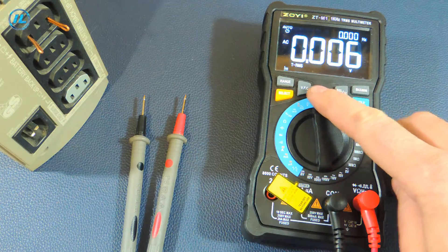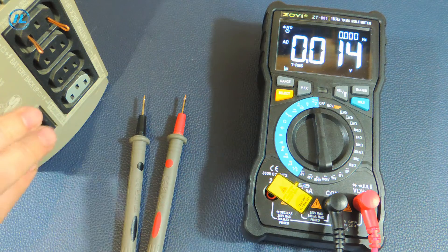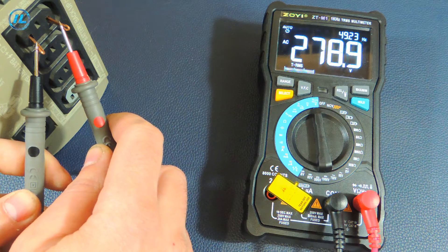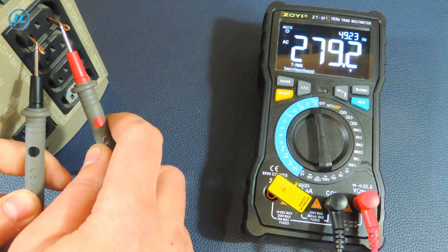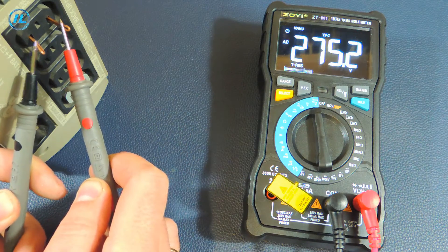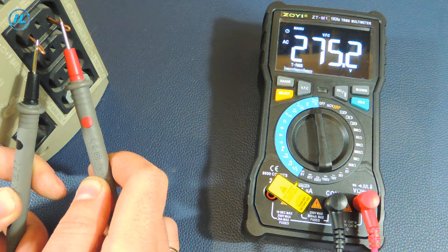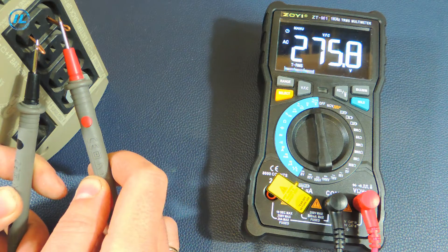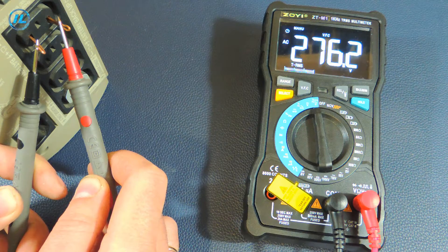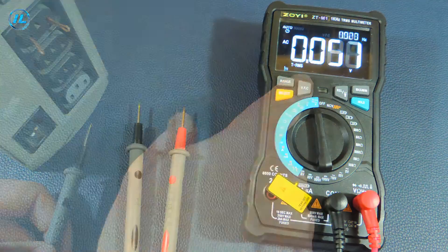To test the VFC function, I connected an uninterruptible power supply to the battery. Without load, the output voltage of the inverter is 279 volts. When the VFC function is enabled, the multimeter shows a voltage of 275 volts. That is, the device filters out various noise and we can see a more accurate result.